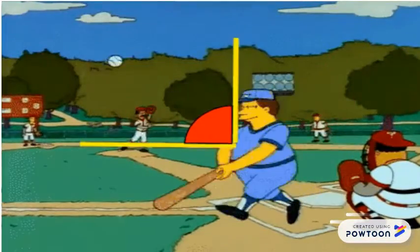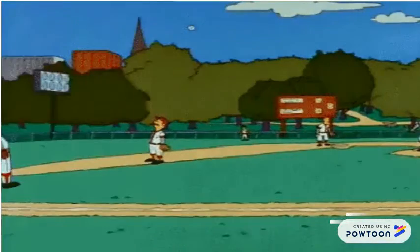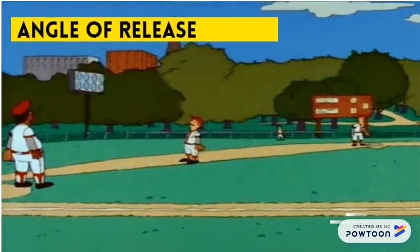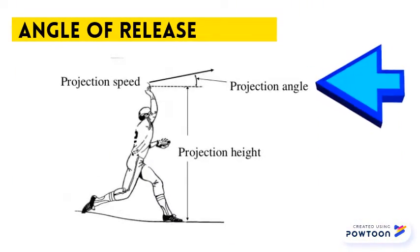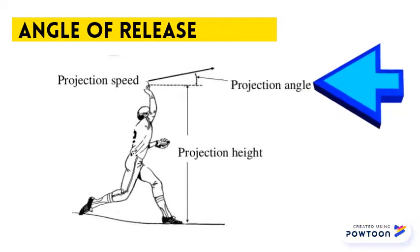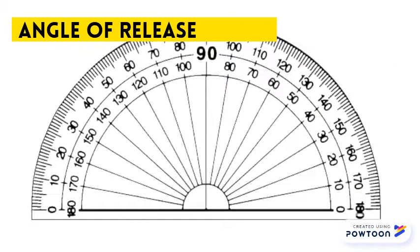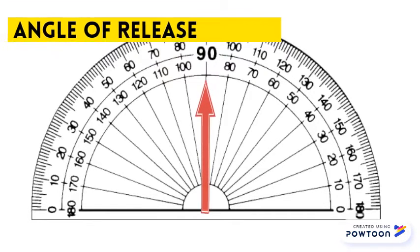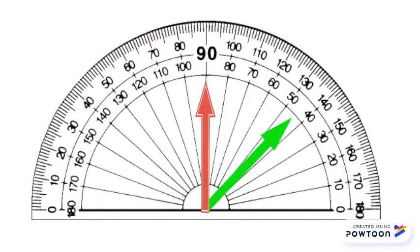The horizontal distance a projectile travels is also affected by the angle of release. Based on a projectile being released at the same speed from the ground, what do you think will happen if you release a projectile at 90 degrees, 45 degrees, or 60 degrees?